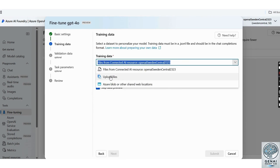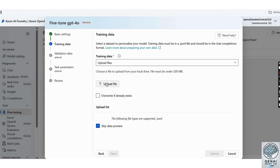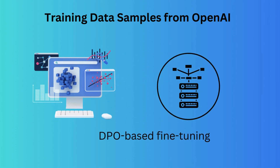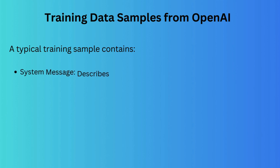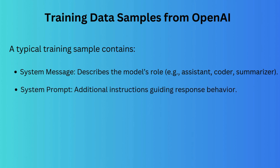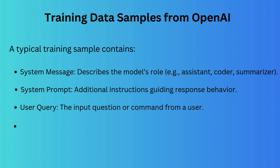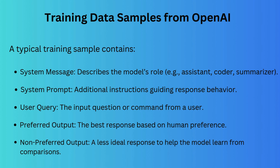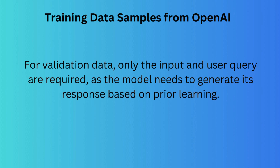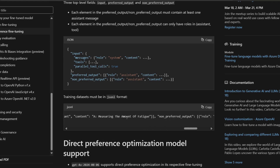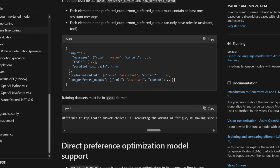Proceed to the File Upload section. In Training Data, select Upload Files and upload your dataset files here. OpenAI provides training data that follows a structured format for DPO-based fine-tuning. A typical training sample contains: a system message describing the model's role (e.g., assistant, coder, summarizer), a system prompt with additional instructions guiding response behavior, a user query (the input question or command), a preferred output (the best response based on human preference), and a non-preferred output (a less ideal response to help the model learn from comparisons). For validation data, only the input and user query are required, as the model needs to generate its response based on prior learning. This structure helps the model understand and improve based on human feedback.